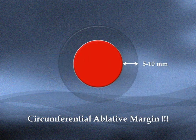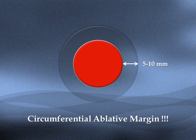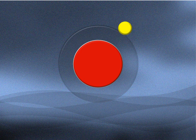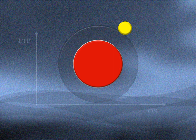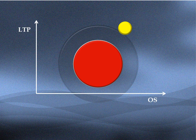Circumferential ablative margin is the most important strategy to achieve the best therapeutic outcomes after any kind of local ablation. In most interventional oncology societies, a 5 to 10 millimeter ablative margin is widely accepted. Local tumor progression is an inevitable event after any kind of ablation, although the definite relation between LTP and overall survival is still not fully established.